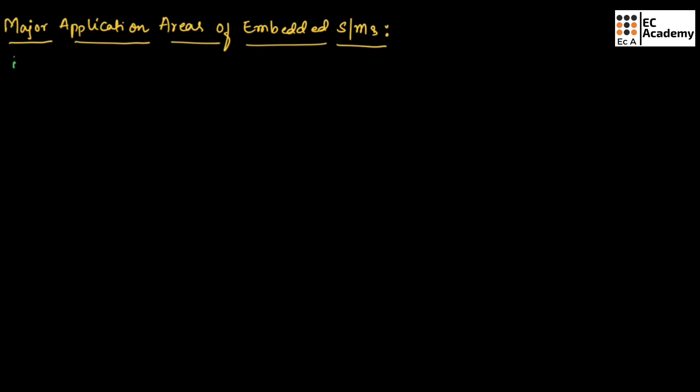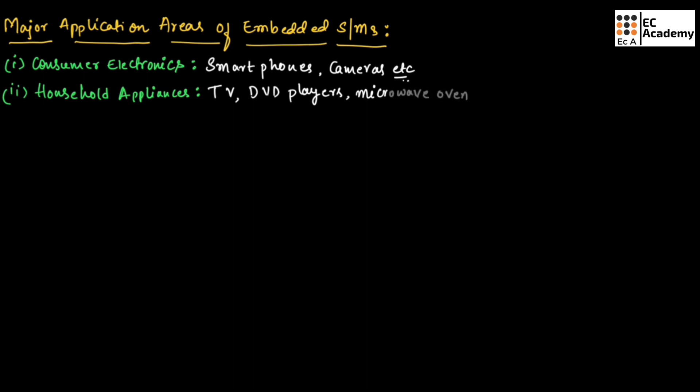First one is consumer electronics. We can give examples as smartphones, digital cameras, etc. Next field of application is household appliances. Examples are television, DVD player, microwave oven, washing machine, fridge, etc.